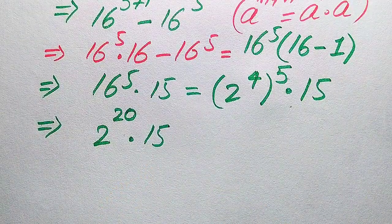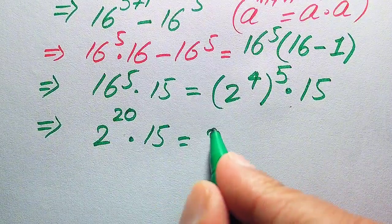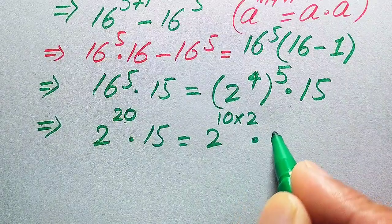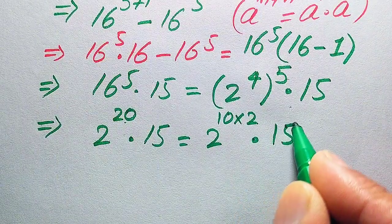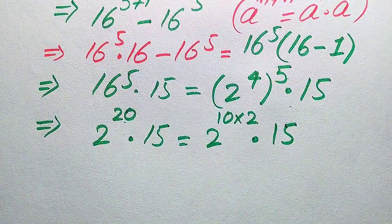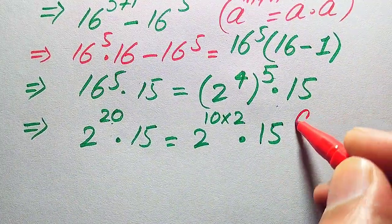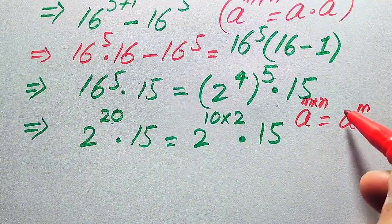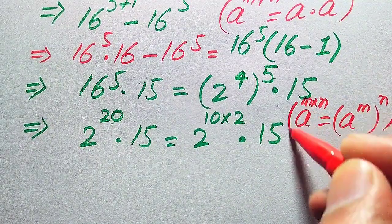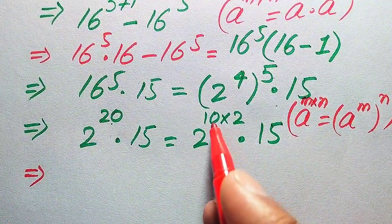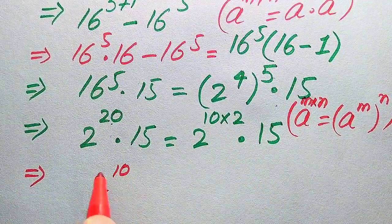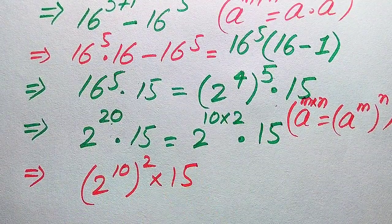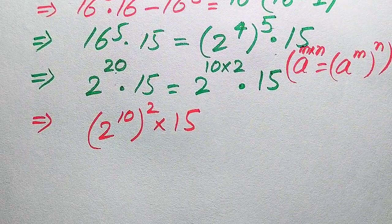We multiply the exponents 4 and 5 to get 2 to the power of 20, multiplied by 15. We then rewrite 2 to the power of 20 as 2 to the power of 10 multiplied by 2. Using the exponential law a to the power of m times n equals (a to the power of m) to the power of n, this becomes (2 to the power of 10) squared, multiplied by 15.